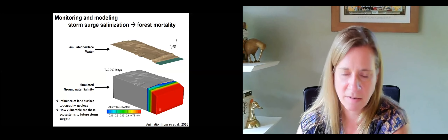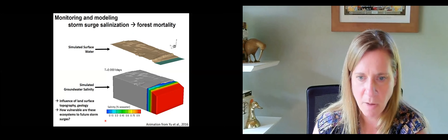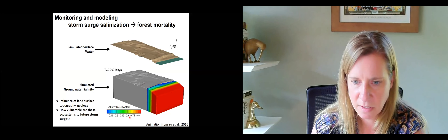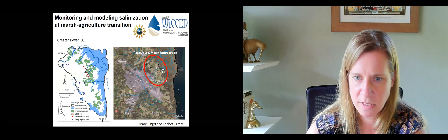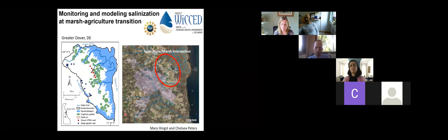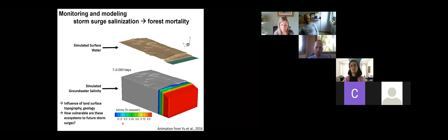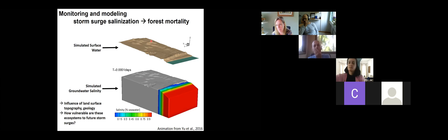Our models are using HydroGeoSphere — coupled surface-subsurface — so we have a storm surge in the surface that runs up and runs back down, dependent on the surface morphology. You get infiltration of salt into the system that eventually flushes out, but in this case it takes five to ten years to fully flush out. We're trying to use models like this to understand areas that are vulnerable to either salinization or flooding.